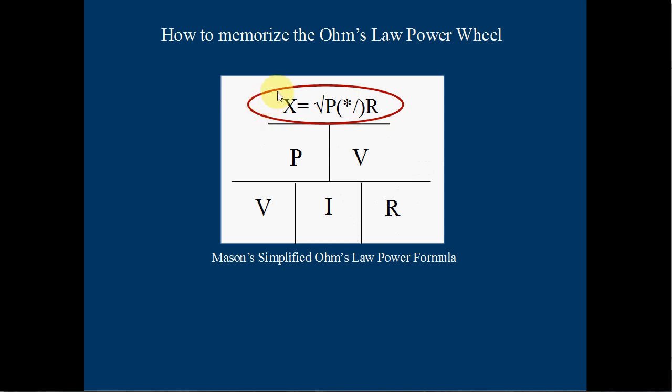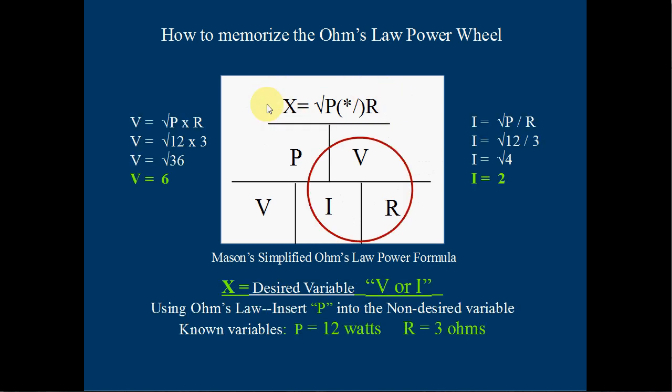Now there's a few rules going with this little formula here. First being, X is the desired variable. So if we're looking for V or I, that would be X. The second one being, we are always using the Ohm's Law formula to accomplish this. And the third is we put our power variable wherever the non-desired variable is. So if we're looking for voltage, we take the square root of P times R to accomplish that, because I put P in the non-desired variable.